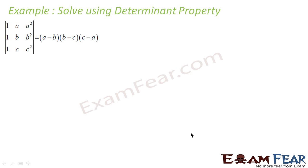We'll use some determinant property to make this question simpler and then we'll expand. Instead of expanding just now, we'll use the determinant property to make this simpler and then expand. One thing I can see is an a minus b, b minus c kind of form.